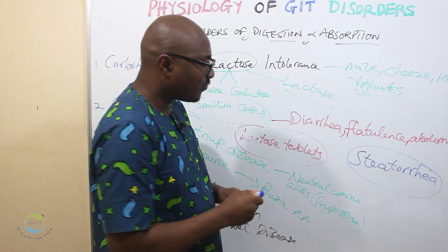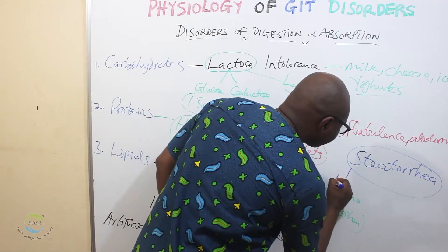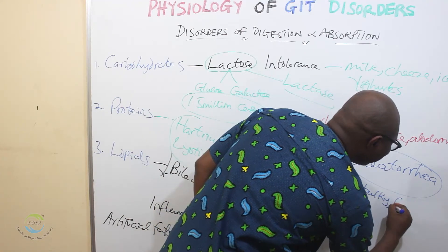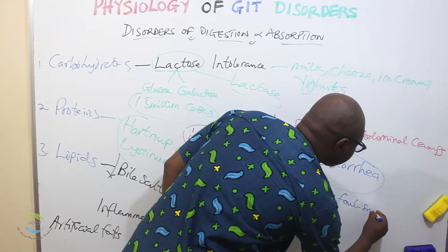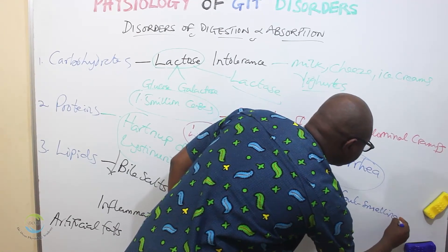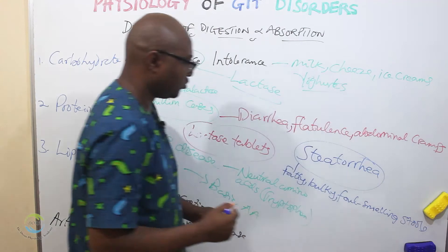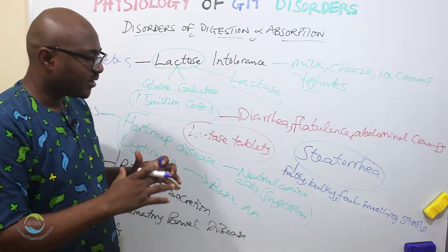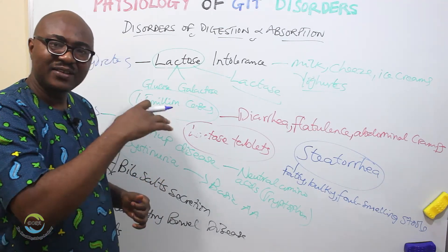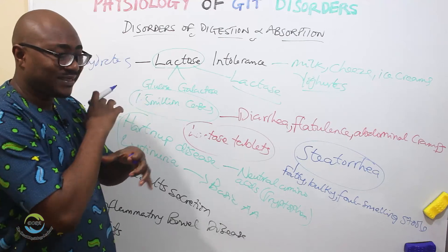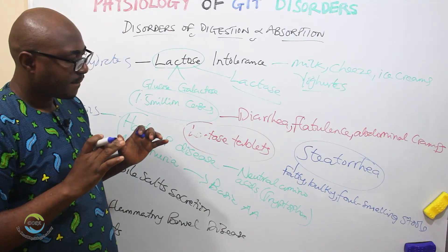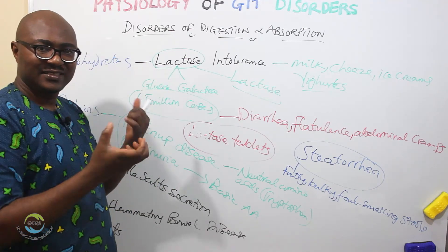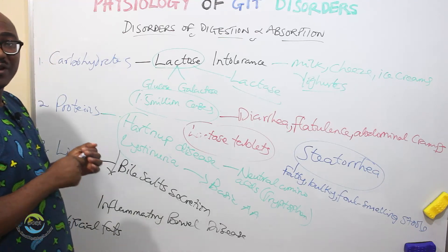Steatorrhea is the passing out of fatty, bulky, and foul-smelling stools. You can see the oil there. It's foul-smelling because of the effect of colonic bacteria on it. They are also difficult to flush because they are full of fat. That is what steatorrhea is all about — a result of malabsorption of lipids.